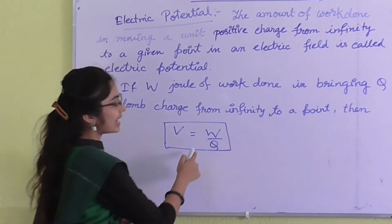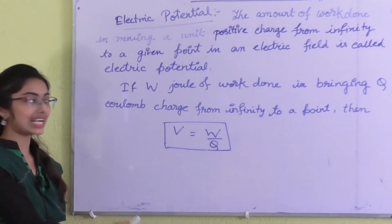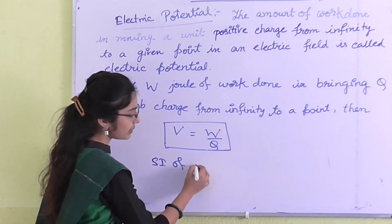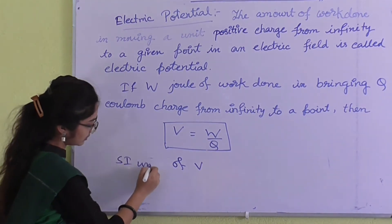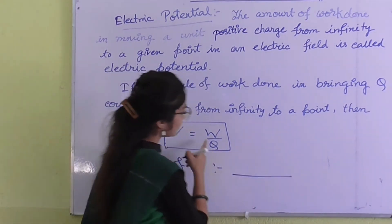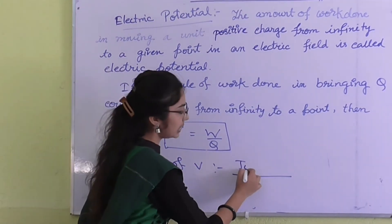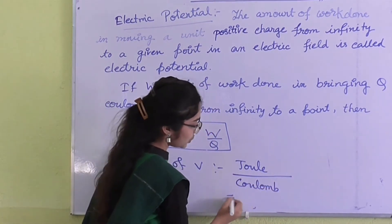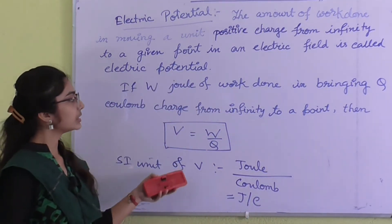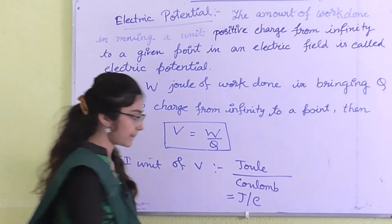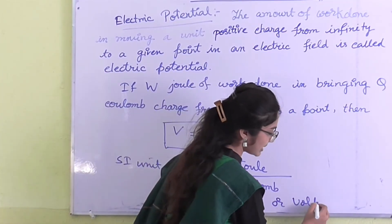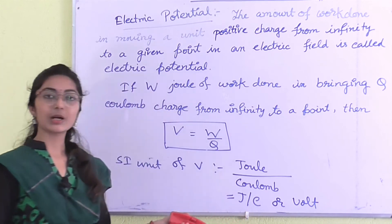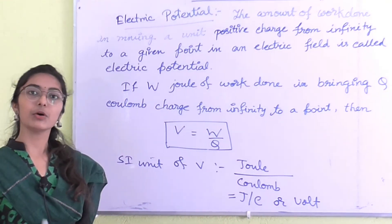The amount of work done per unit charge is known as potential. The SI unit of V: work done is in Joules and charge is in Coulombs, so SI unit of potential is Joule per Coulomb, which is also known as Volt (V). You have to learn both units — Joule per Coulomb or Volt — because you don't know which form the question will ask.